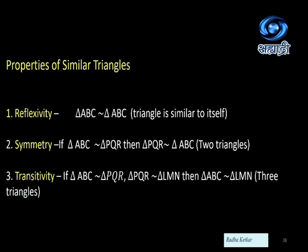Third property: transitivity. We consider three triangles. If triangle ABC is similar to triangle PQR, and triangle PQR is similar to triangle LMN, then obviously triangle ABC and triangle LMN will also be similar to one another. Simply put: if the first is similar to the second, and the second is similar to the third, then the third is also similar to the first.